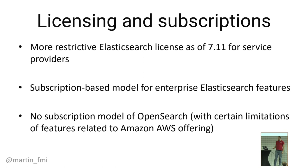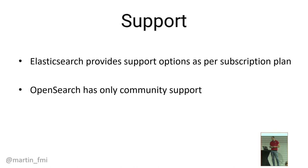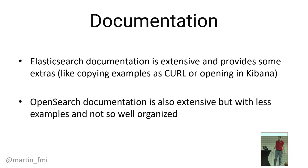In terms of support, Elasticsearch as an enterprise company provides support options per subscription plan. For OpenSearch, there is no formal support — you rely on the public forum; if you have an issue, you go there and ask. In Elasticsearch, with a license, you get support from official support teams. In terms of documentation, the Elasticsearch documentation is quite rich with lots of examples you can copy and run directly in Kibana or via curl. The OpenSearch documentation is more scarce, lacking those goodies — you cannot run examples directly in OpenSearch Dashboards. Part of this is because some OpenSearch documentation is contributed by the community, so it's less organized with fewer examples.